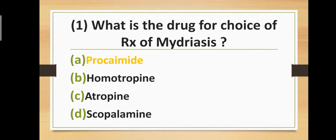Question number one: What is the drug of choice for treatment of mydriasis? Option A: Procainamide. Option B: Homatropine. Option C: Atropine. Option D: Scopolamine. Correct answer is Option A — Procainamide. Procainamide is the drug of choice for treatment of mydriasis.